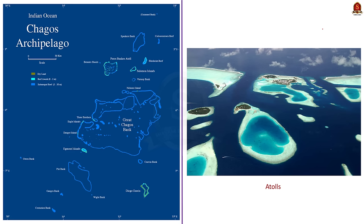Thirdly, Chagos Archipelago — it is a cluster of 7 atolls located in the central Indian Ocean. An atoll is a ring-shaped coral reef that surrounds a water body called a lagoon. Diego Garcia is the biggest island in the Chagos Archipelago. It is a disputed territory between the United Kingdom and Mauritius. The dispute is over the forceful evacuation of the Chagossians, the indigenous population, from Diego Garcia by UK authorities for the establishment of a US military base in the 1960s.